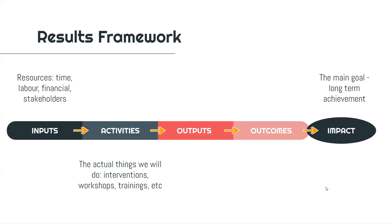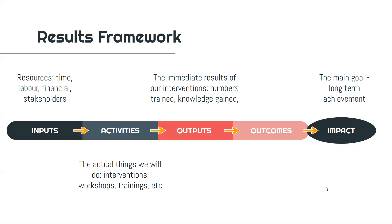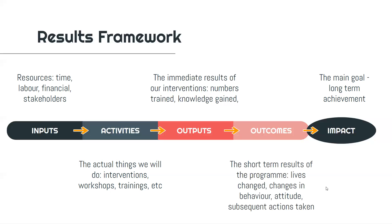The immediate results of your activities we call outputs. This is normally what you can say as soon as the intervention has happened: we trained 50 people today, such-and-such knowledge was gained, three clinics were built. There are also short-term results of the program — by short-term, I mean with respect to the impact. So if we've trained 50 people and they've gained this knowledge, what do we want to change in their lives? What attitude or mindset shifts do we want to see? What subsequent actions are they going to take? We call these outcomes.